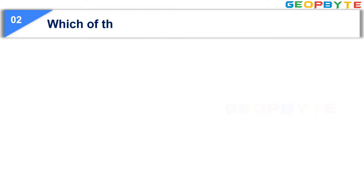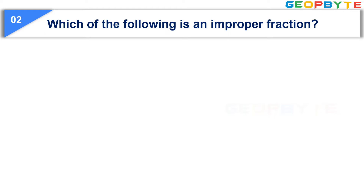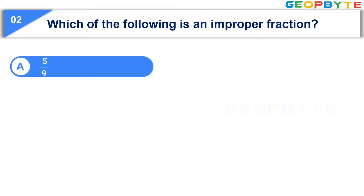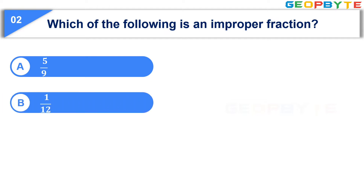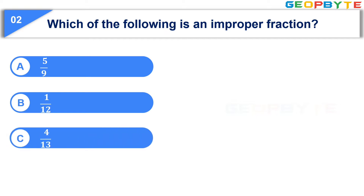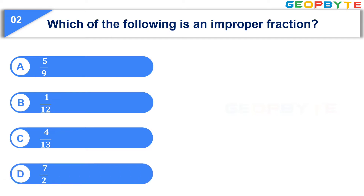The second question is, which of the following is an improper fraction? Option A, 5 by 9. Option B, 1 by 12. Option C, 4 by 13. Option D, 7 by 2. Your time starts now.